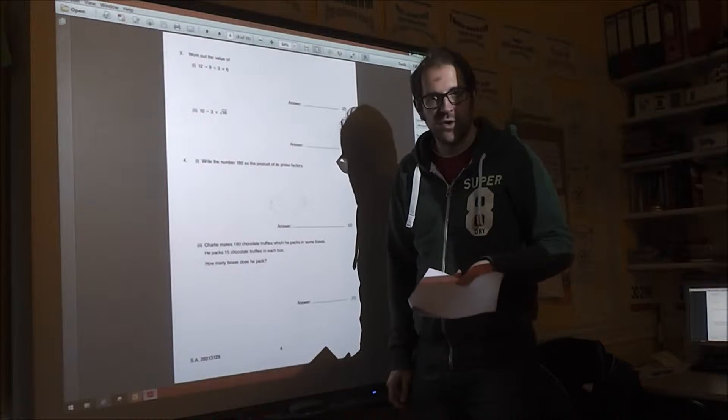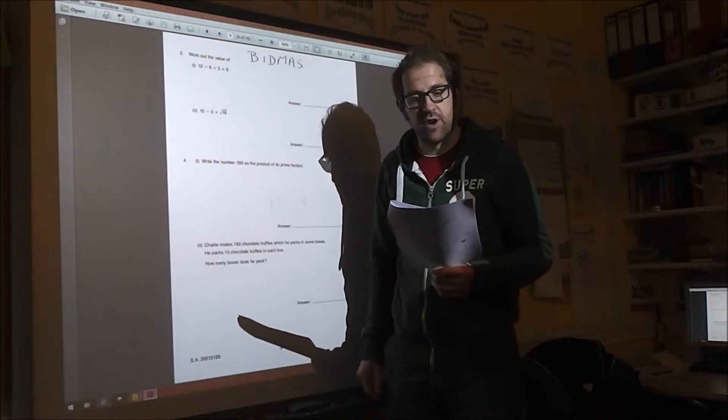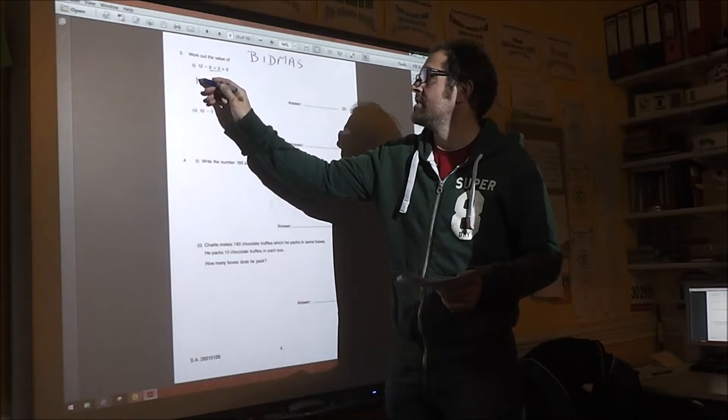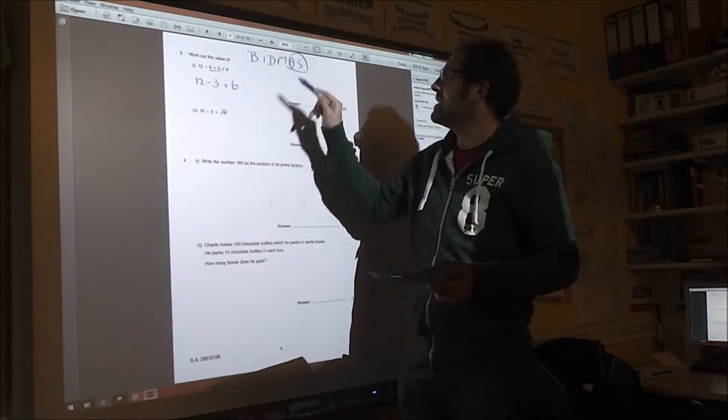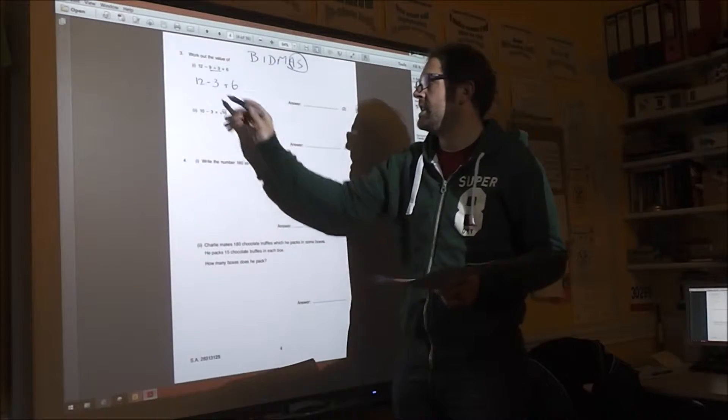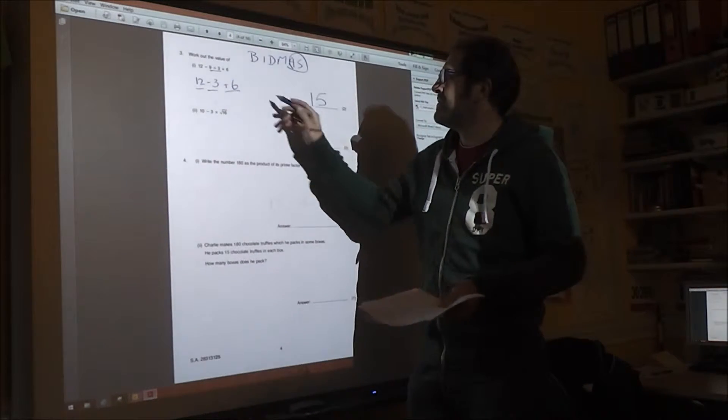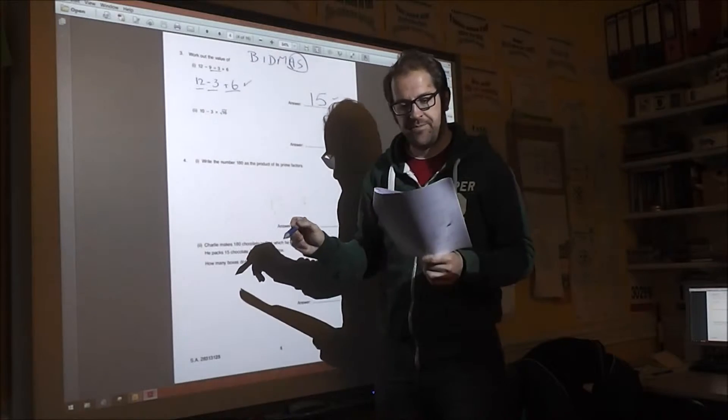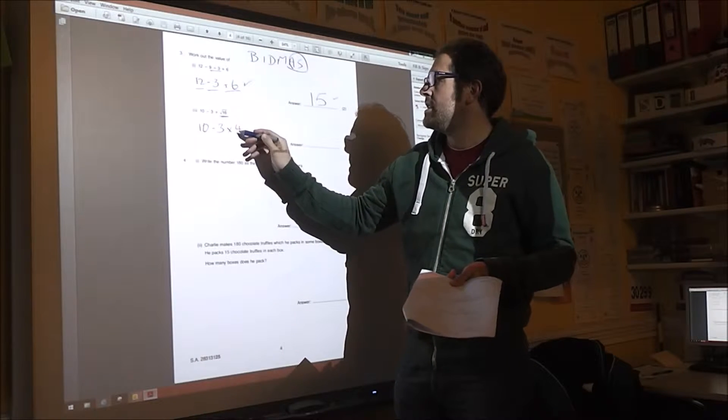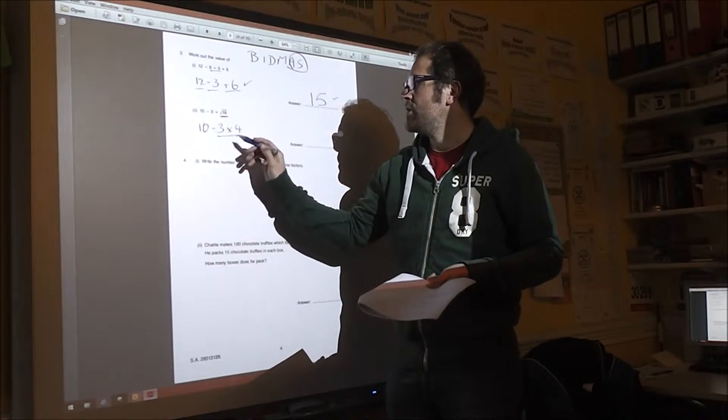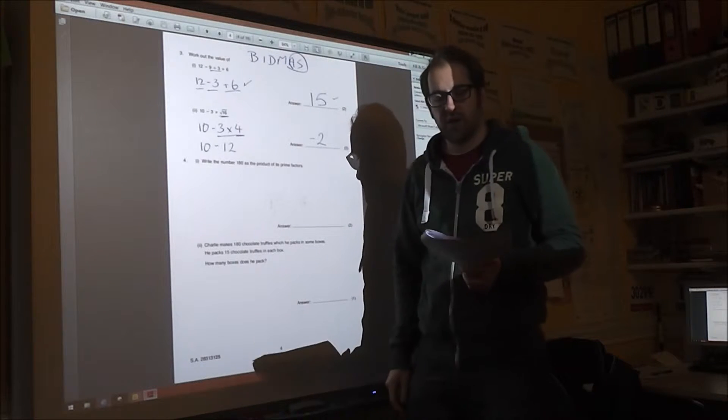Question three is on BIDMAS and question four is prime factors. So it's well worth writing BIDMAS at the top so you check you get the right order. So we do the division first. So 9 divided by 3 is 3. Now be very careful. When you add and subtract, think of it as a journey up and down the number line. So 12 minus 3 is 9 plus 6 is 15. Again, one mark for working, one mark for answer.